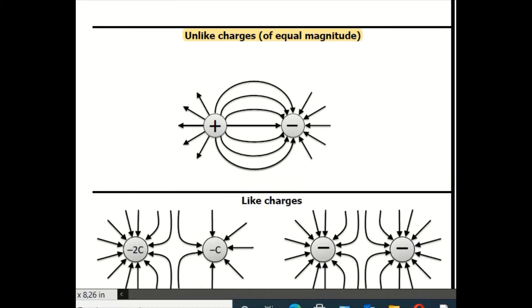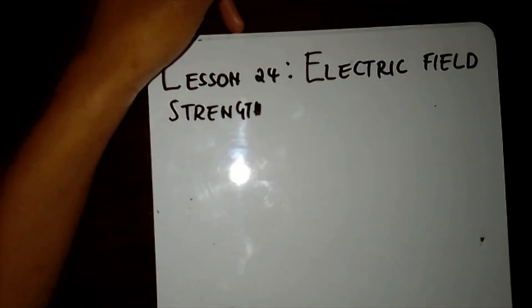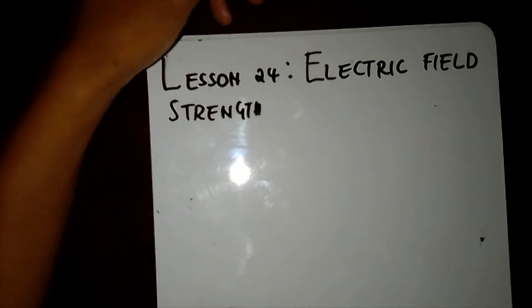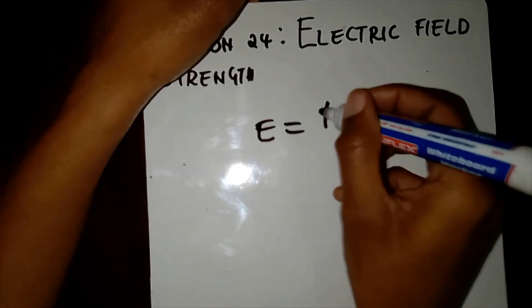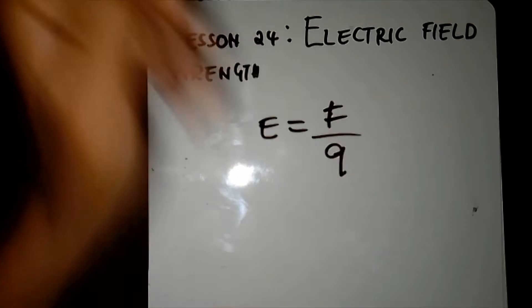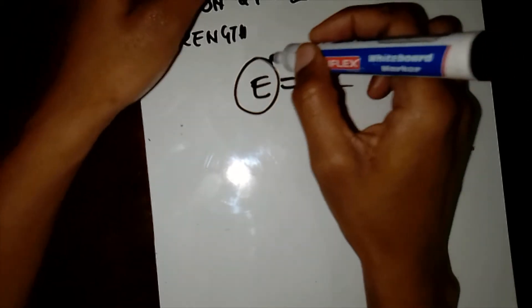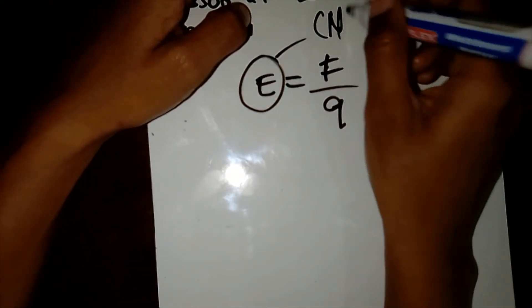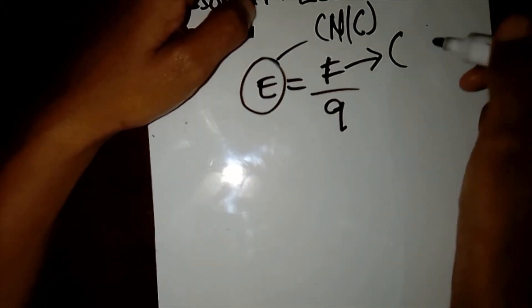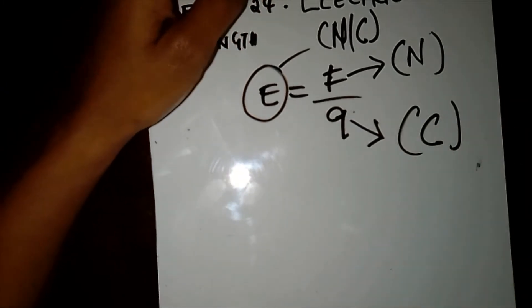Electric field strength at any point in space is the force per unit charge experienced by a positive test charge at that point. The electric field strength E is measured in newtons per coulomb, F is your force measured in newtons, and q is your charge measured in coulombs.